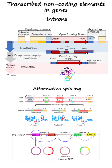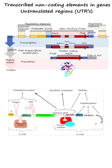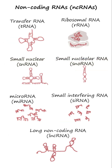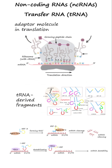Transcribed non-coding elements in genes — the introns — enable alternative splicing, while the untranslated regions affect translation, stability, and localization of mRNA.